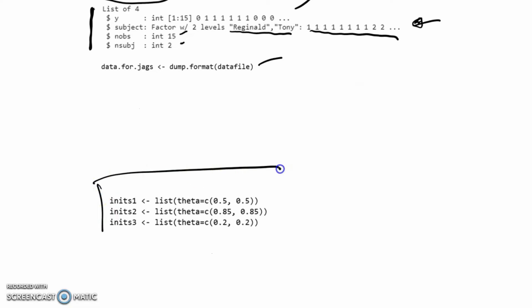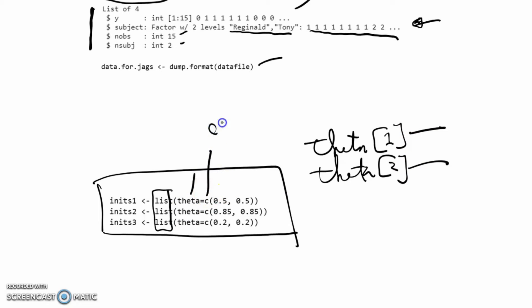We need to initialize. We need to have initial values for both theta 1 and theta 2. The way we specify that is, there's a list function, and we say theta, and because we've got theta indexed by 1 and 2, we have C for concatenation, and then put in two values. This would be the initial value of theta for Reginald, this would be the initial theta value for Tony.